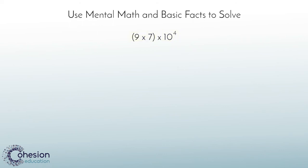Remember, in fifth grade, it is expected that students can quickly and accurately recall the answer to 9 times 7, which is 63. Now that we have the product of the basic fact, we need to multiply it times the fourth power of 10.